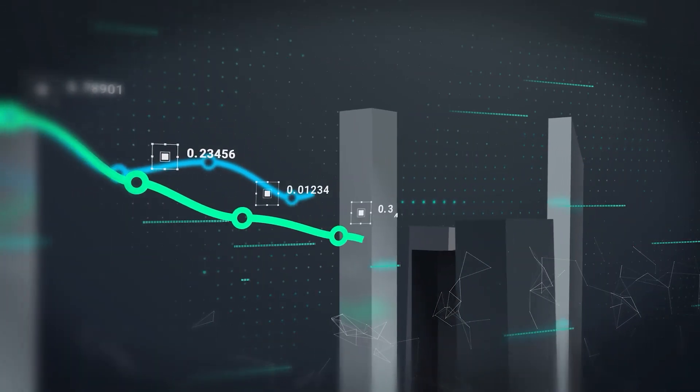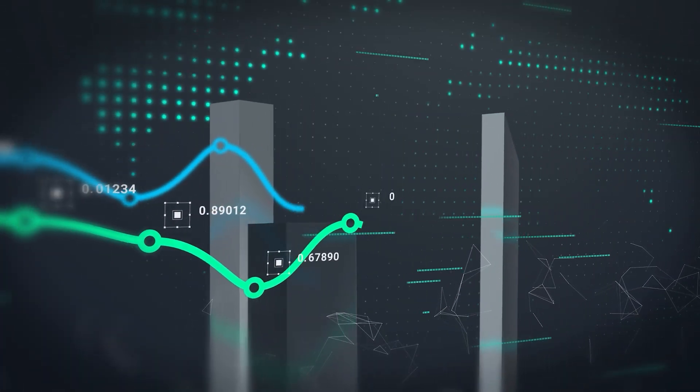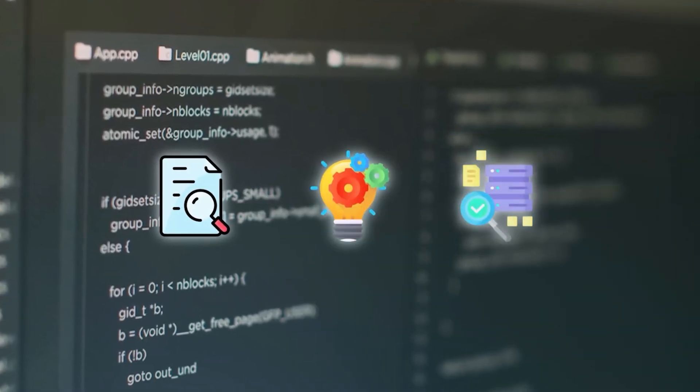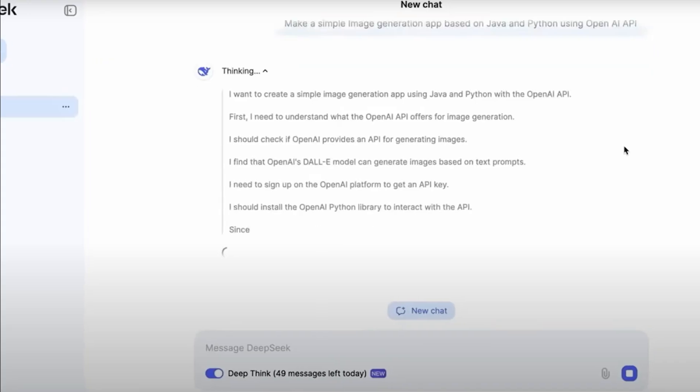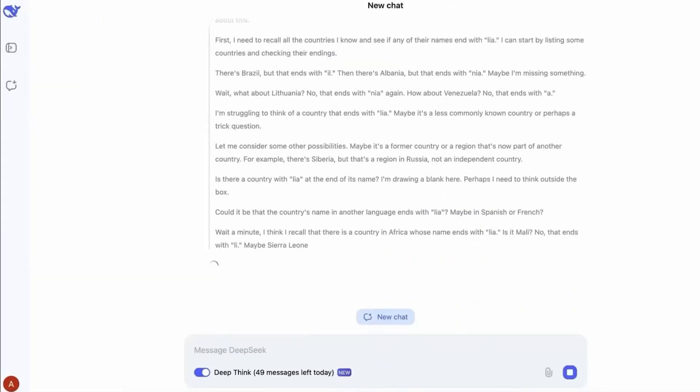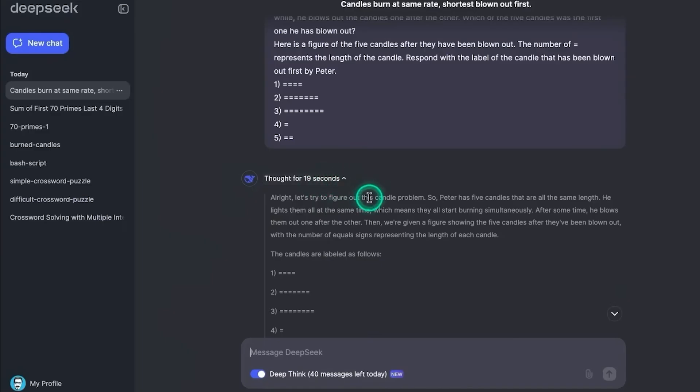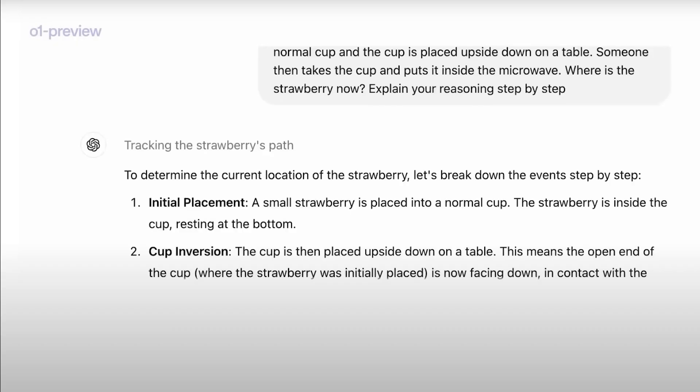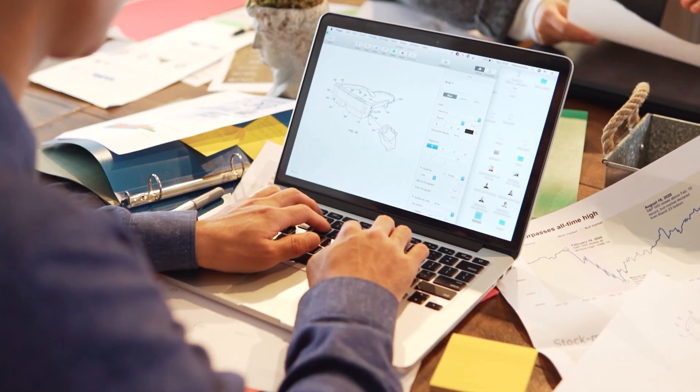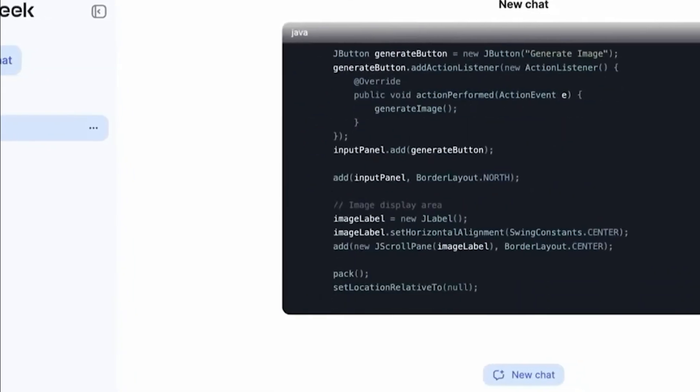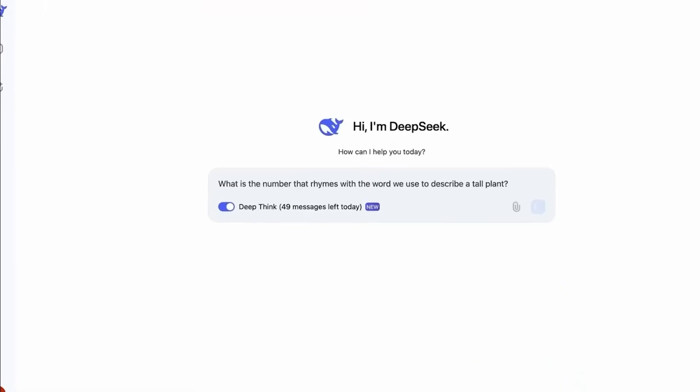Funding isn't the only concern. Critics argue that OpenAI's approach is outdated and overly reliant on massive centralized infrastructure. Take China's DeepSeek R1 as an example. Released earlier this week under an open-source MIT license, DeepSeek matches or even outperforms OpenAI's own models on certain benchmarks, at just 3% of the cost. This has led some to question whether OpenAI is over-engineering a problem that others are solving more efficiently.